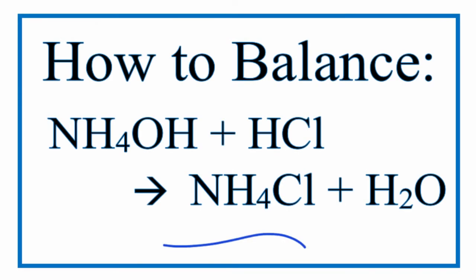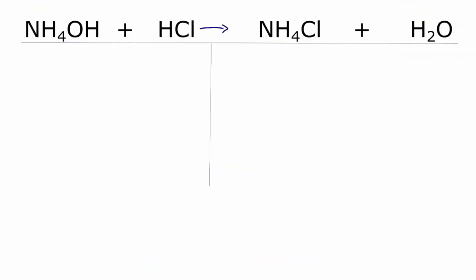In order to balance this equation, NH4OH plus HCl yields NH4Cl plus H2O, we first need to count up all of the atoms on each side of the equation.